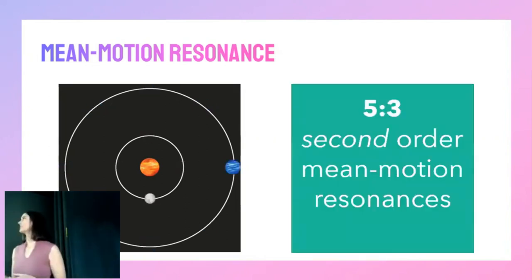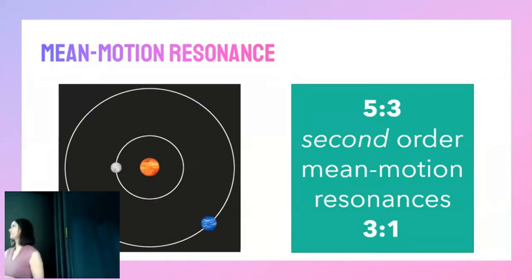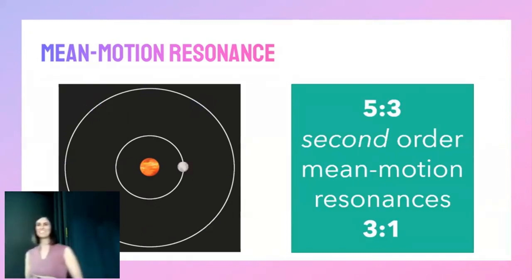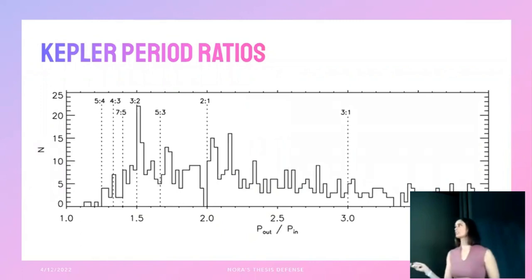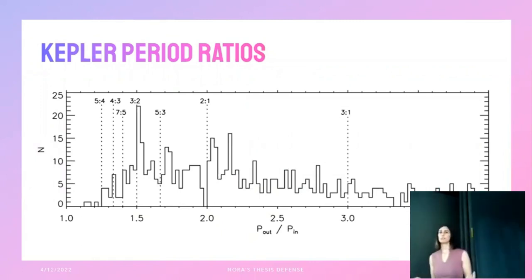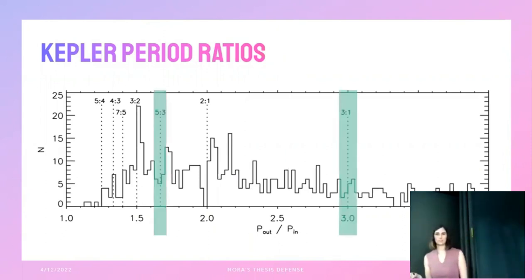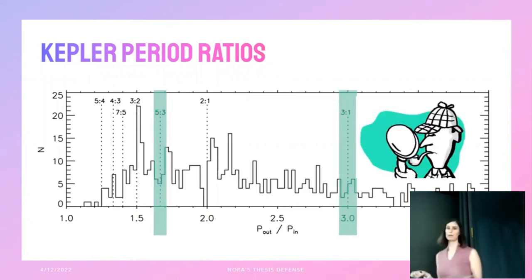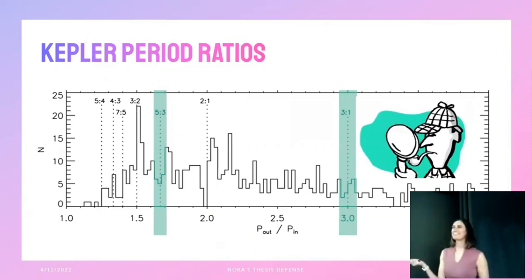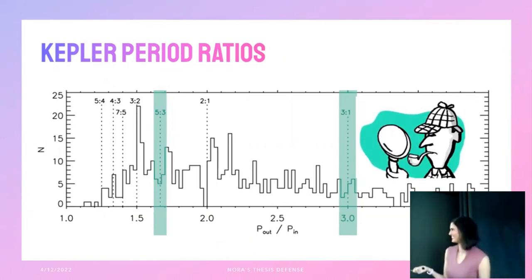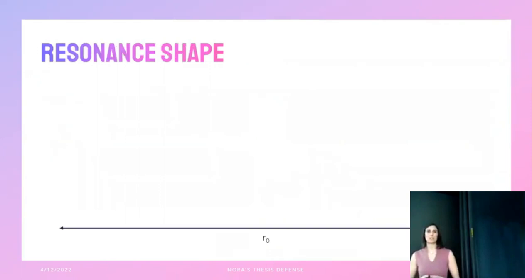This type of resonance between orbital frequencies is called mean motion resonance. We're interested in places where integer multiples of the frequencies equal one another. For a two-to-one mean motion resonance, the outer planet goes around once while the inner planet goes around twice. A two-to-one MMR is a first-order resonance because two minus one equals one. In this project we focused on second-order mean motion resonances, specifically the five-to-three and three-to-one.